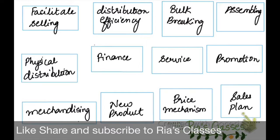The first function is Facilitate Selling. Intermediaries help in facilitating selling by being physically close to the customer. The producer and customer are geographically far away, so the intermediaries bridge that gap and help move the actual product from the producer to the consumer.